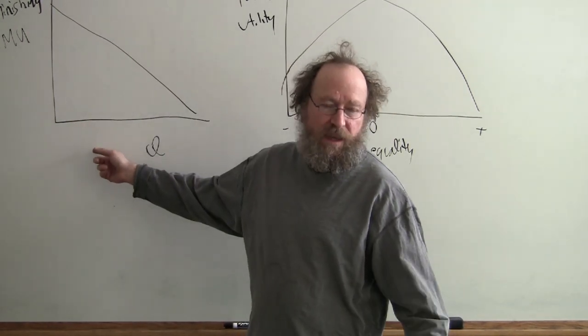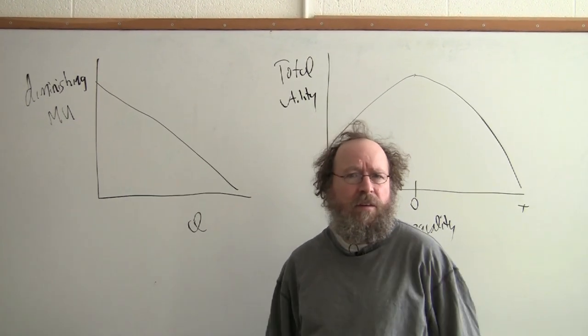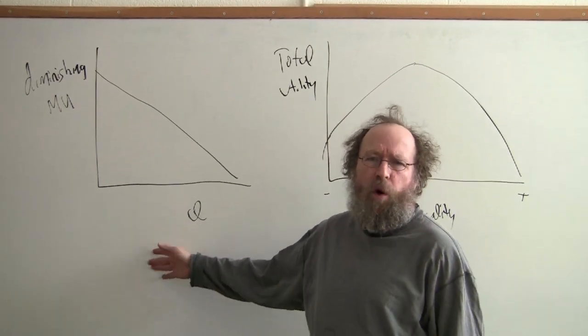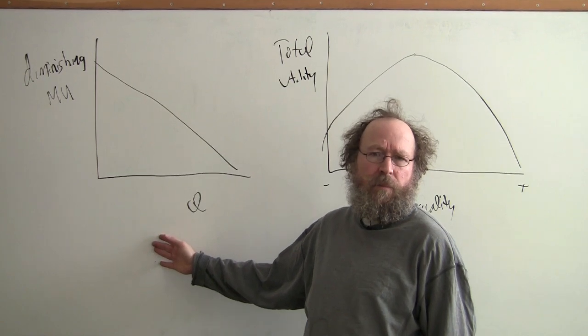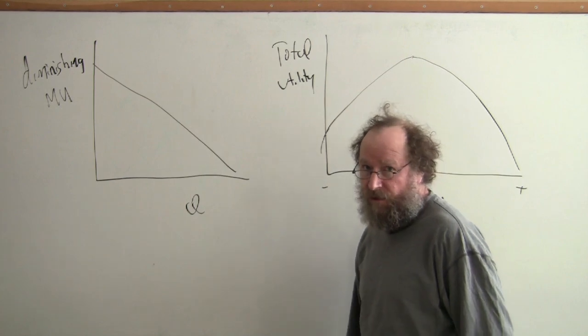From utilitarianism, we get this basic graph: diminishing marginal utility. You know about that - this is standard orthodox economics. This is where they get the demand curve, the downward sloping demand curve.